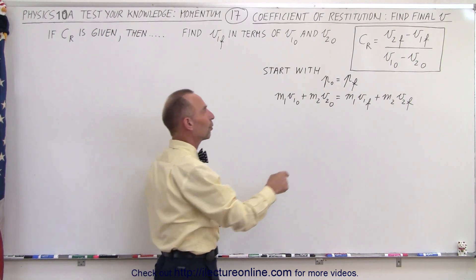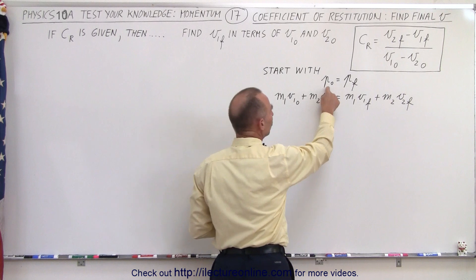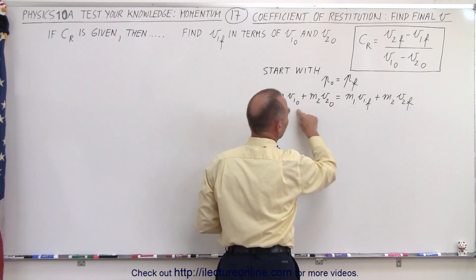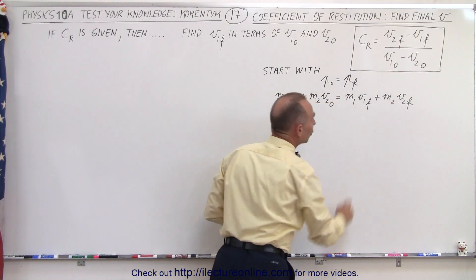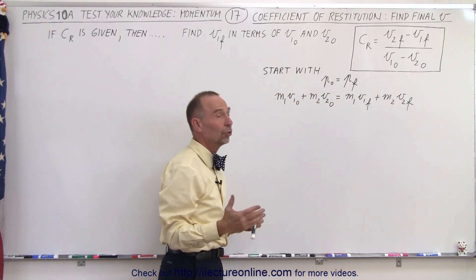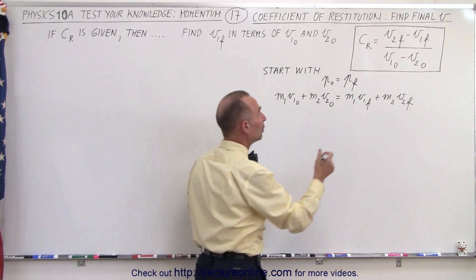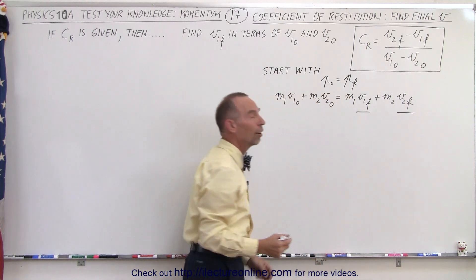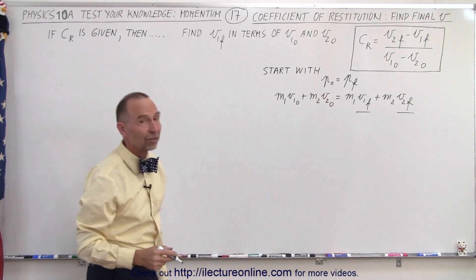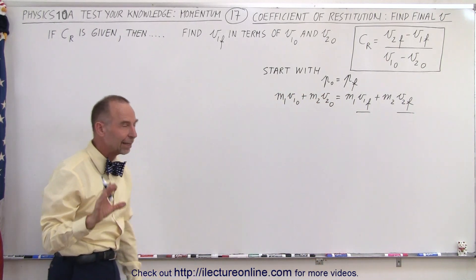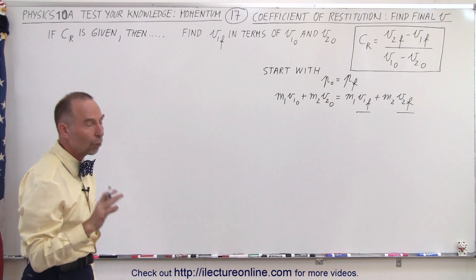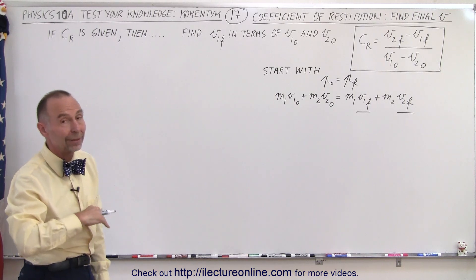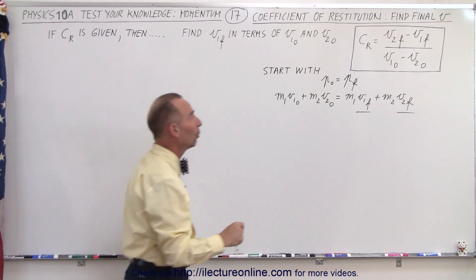We start by saying that the initial momentum equals the final momentum — this is going to be the equation. Normally we do not know the final velocities of the two objects, but since we're given the coefficient of restitution, we should be able to eliminate one of the two variables.